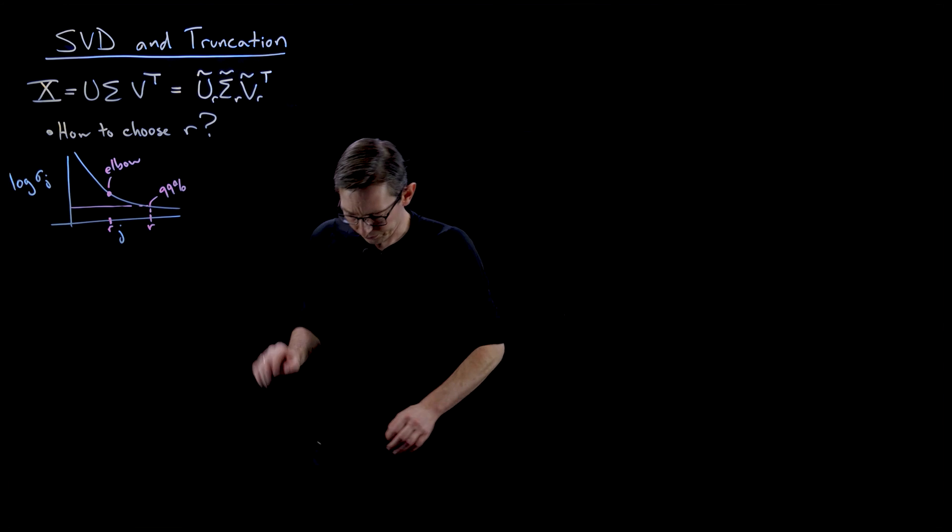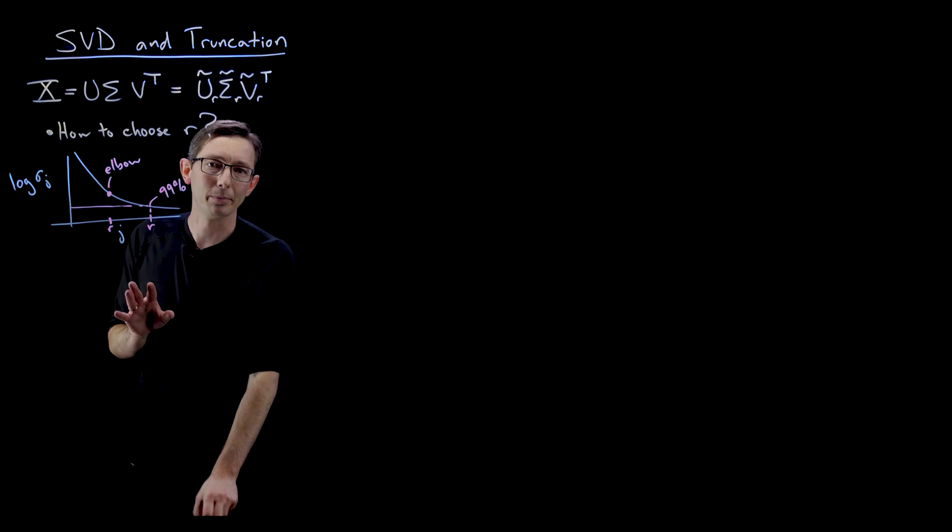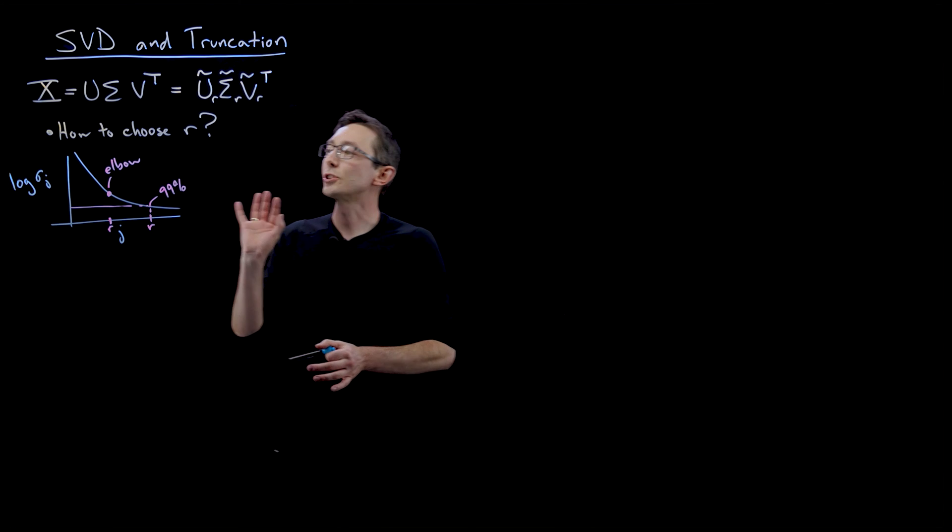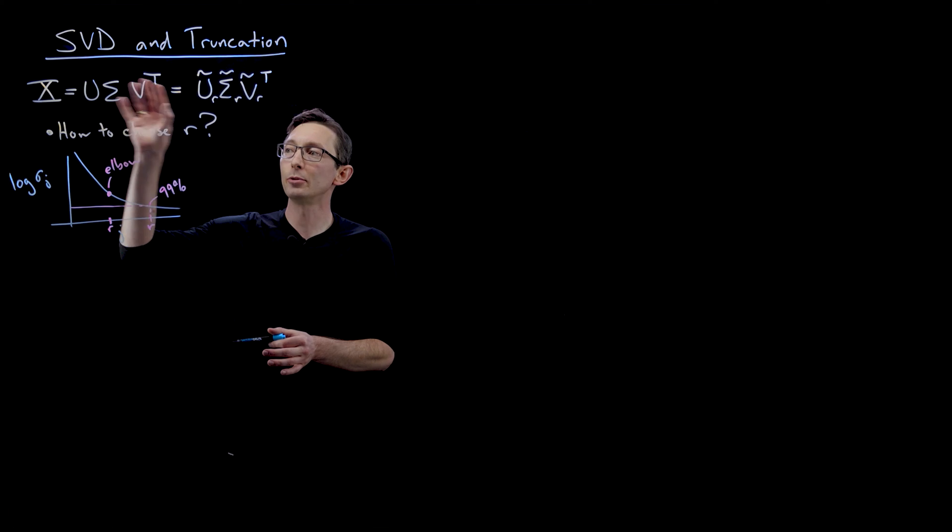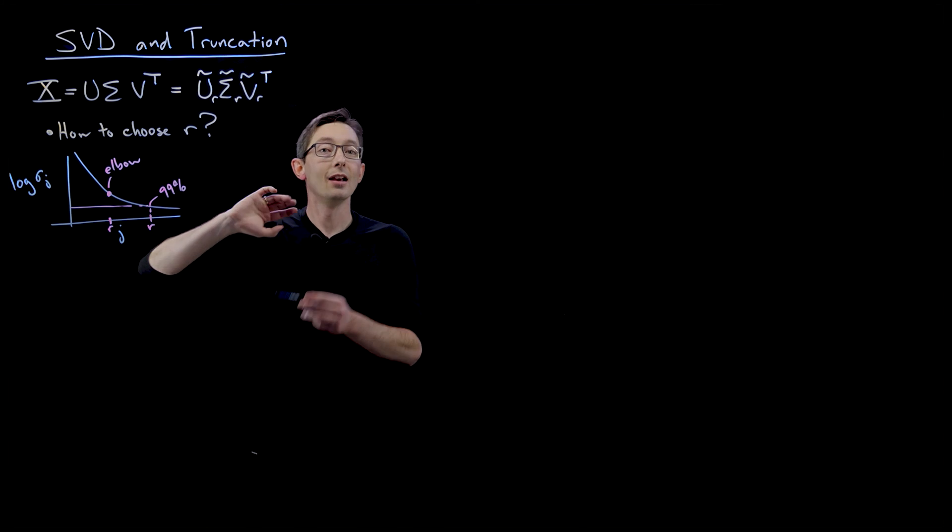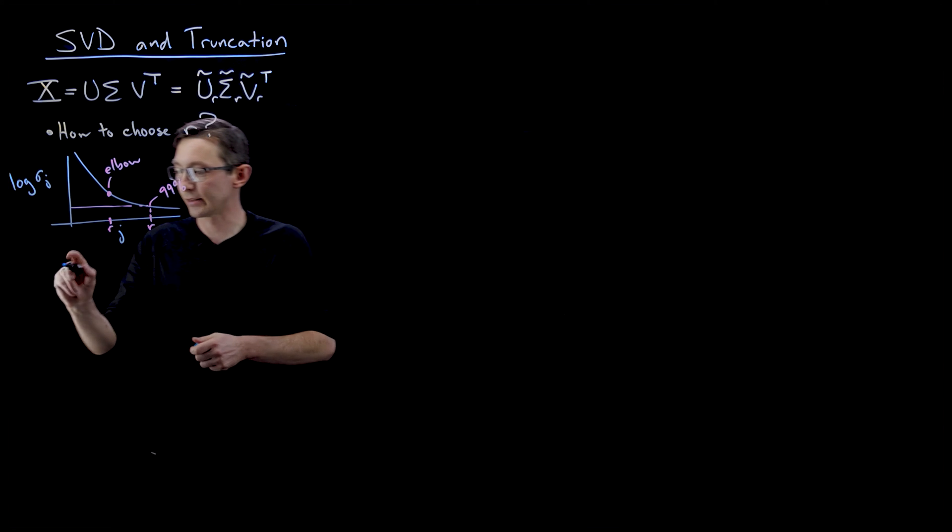And so there is a fantastic paper by Gavish and Donoho that I want to point you towards, which essentially comes up with an optimal way to truncate, an optimal rank r to truncate given some assumptions on the type of data you have.